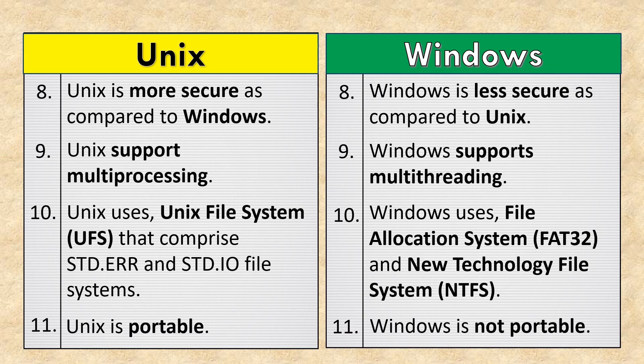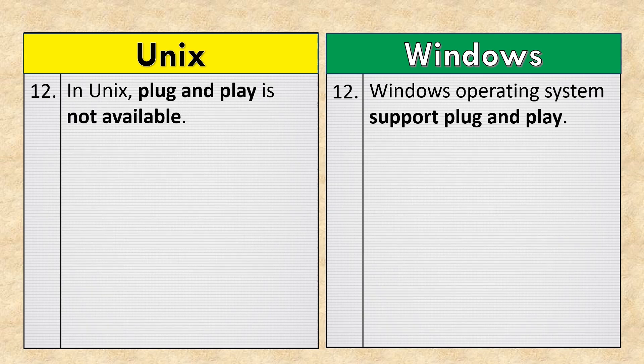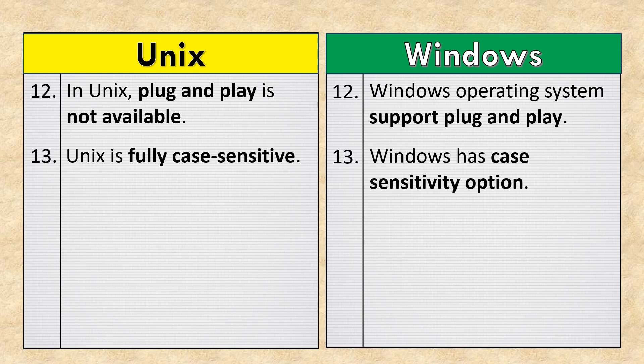Unix is portable, while Windows is not portable. In Unix, plug-and-play is not available, whereas Windows operating system supports plug-and-play. Unix is fully case-sensitive, while Windows has a case-sensitivity option.